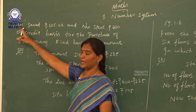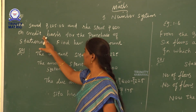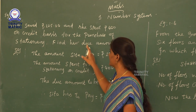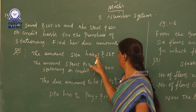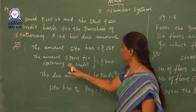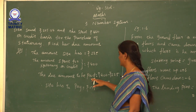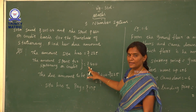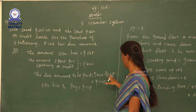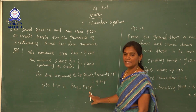Example 1.5: Sita saved rupees 225 and she spent rupees 400 on credit basis for the purchase of stationery. Find her due amount. She purchased things for Rs. 400 but she has only Rs. 225. The difference between 400 and 225 is 175. So Sita has to pay Rs. 175 on credit.